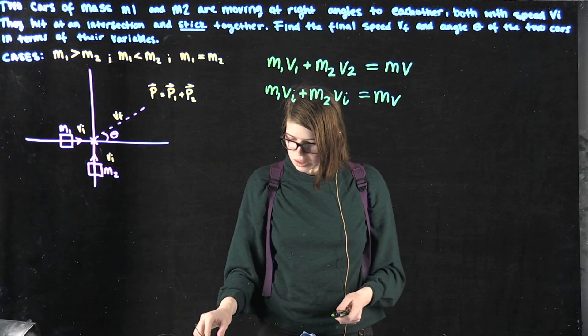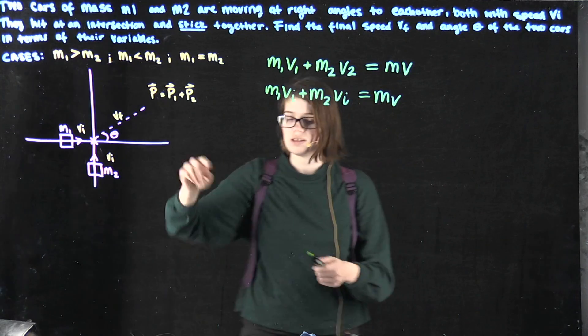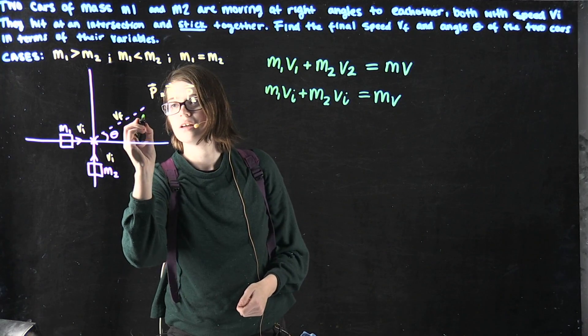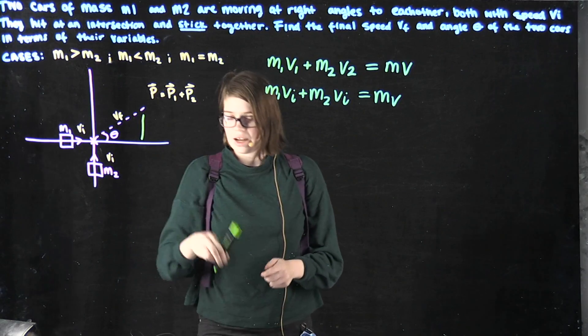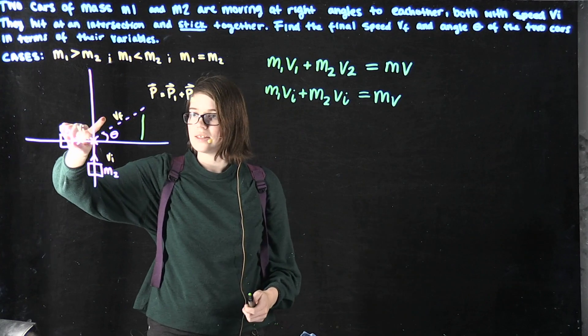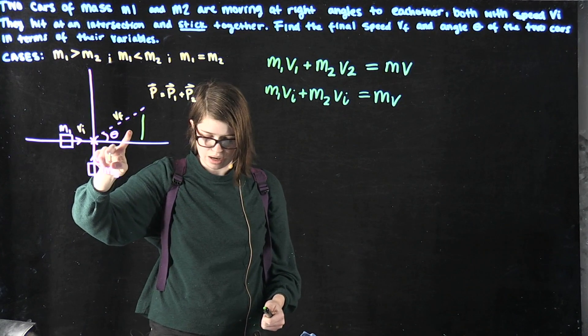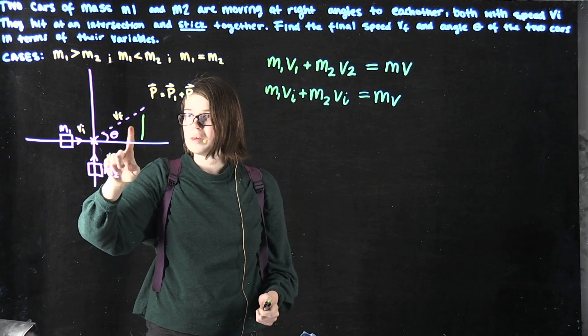Because we are given these, we can form a right triangle here with our velocity final and our angle theta.